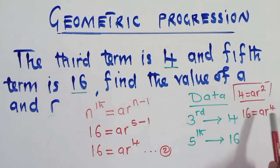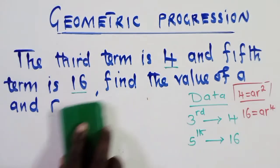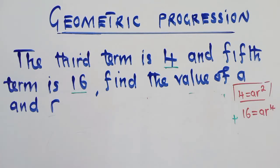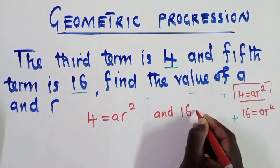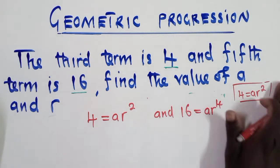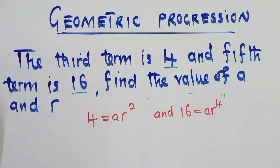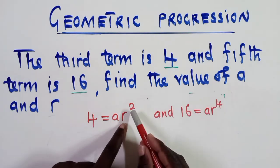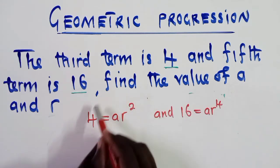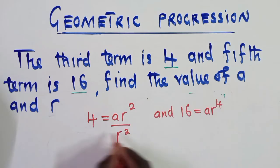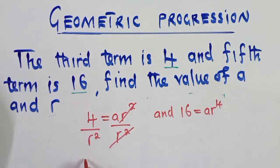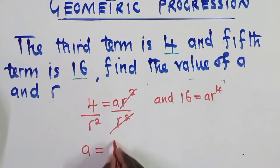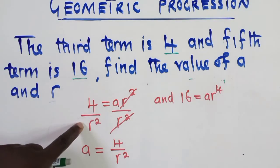The question wants us to find a and r, so we take advantage of the two equations: equation 1 is 4 = a · r² and equation 2 is 16 = a · r⁴. The easiest way to solve these simultaneously is to start with the smaller power. From equation 1, divide both sides by r², giving us a = 4 / r².